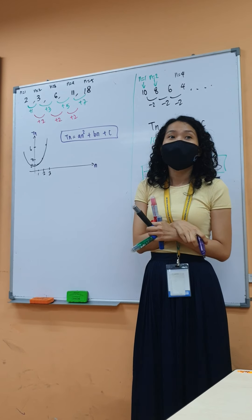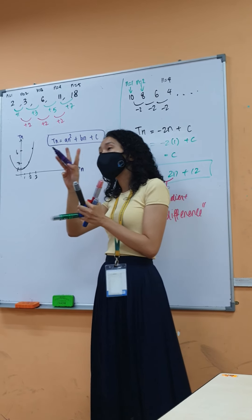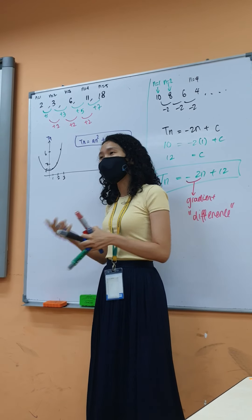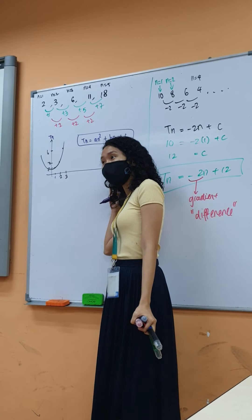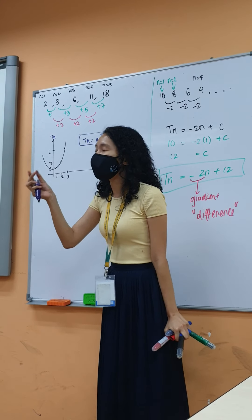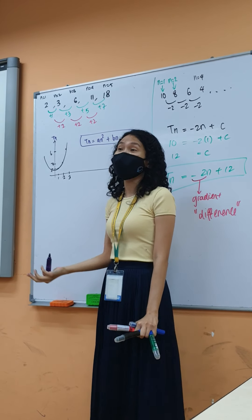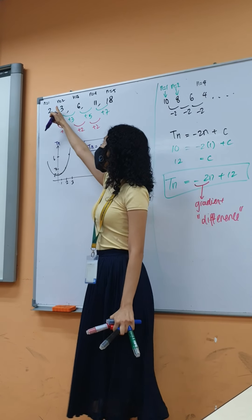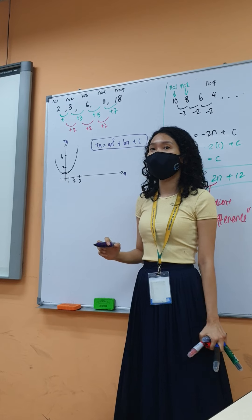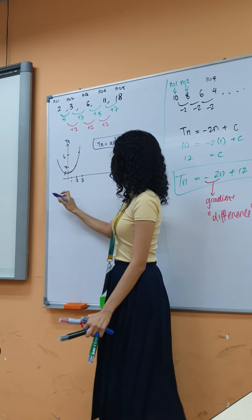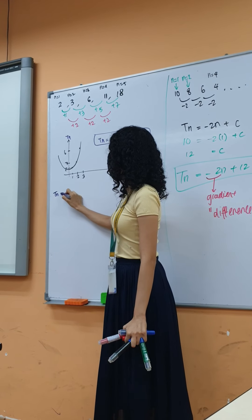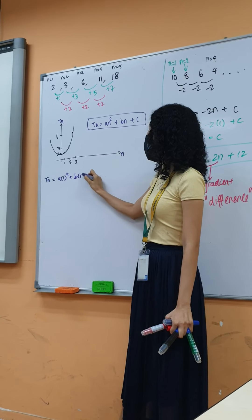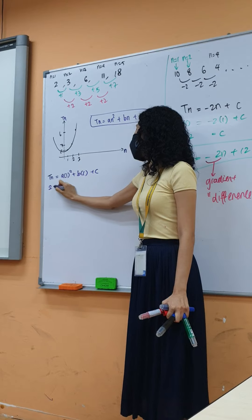There are two ways to do this. The first way is the longer way, but you'll remember it forever because it's basic math. The second one you have to memorize a formula, but it's awesome. So let's do the first one. When n equals to 1, I'm going to get 2.